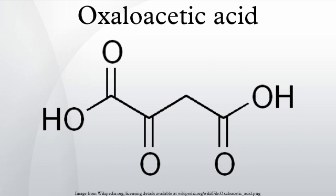Biochemical functions: Oxaloacetate is an intermediate in the citric acid cycle, where it reacts with acetyl-CoA to form citrate, catalyzed by citrate synthase. It is also involved in gluconeogenesis, urea cycle, glyoxylate cycle, amino acid synthesis, and fatty acid synthesis. Oxaloacetate is also a potent inhibitor of Complex II.